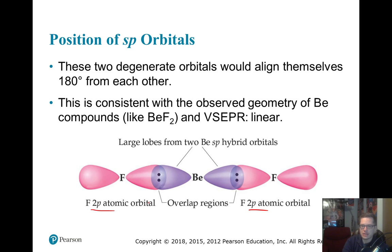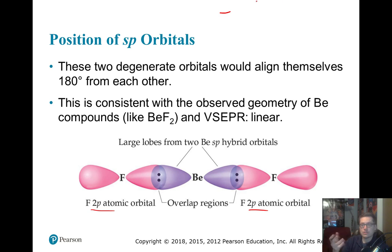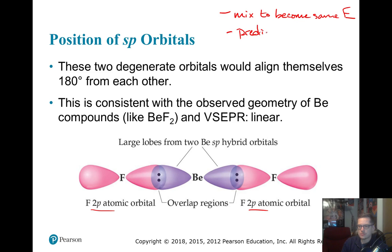This hybridization allows us to predict geometry. The two main reasons we need hybridization: first, it lets us reconcile electrons being at different energy levels — they mix to become the same energy. Second, it still allows us to predict geometric shapes.